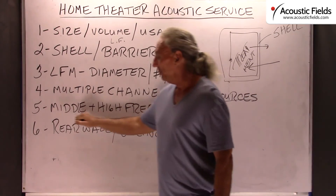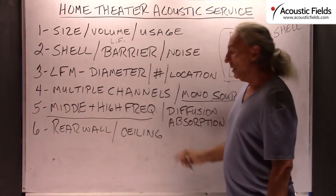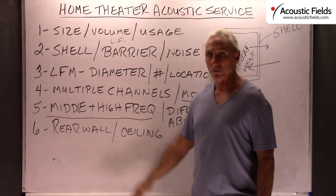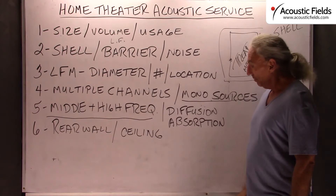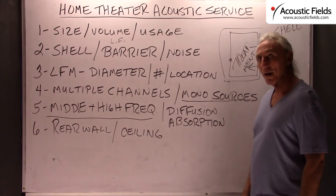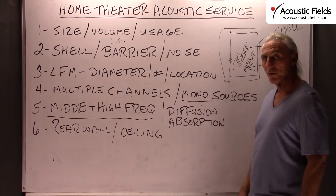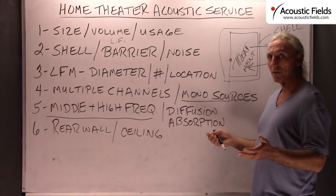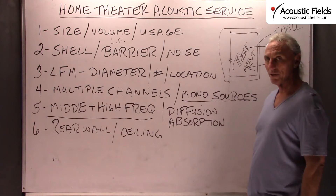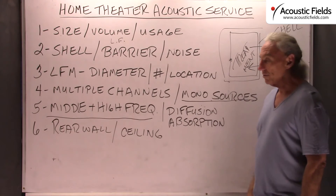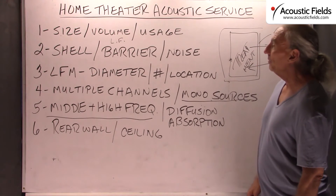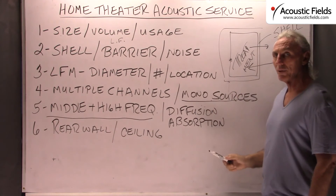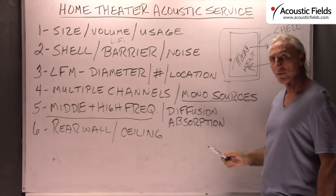How do we deal with middle and high frequency issues? We have our two technologies: diffusion and absorption. For home theater, we favor diffusion on the rear wall and work with a combination of absorption and diffusion on the ceiling. The goal with the ceiling treatment is to make the ceiling acoustically disappear so the room feels larger, and you can achieve that with the right combinations of absorption and diffusion.